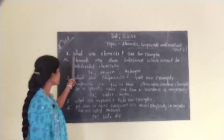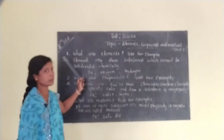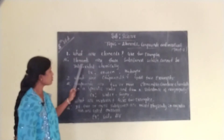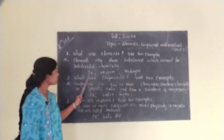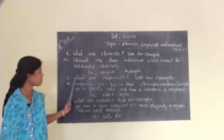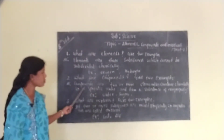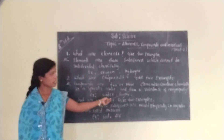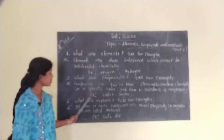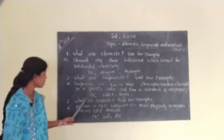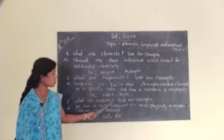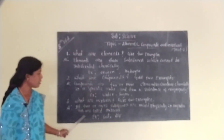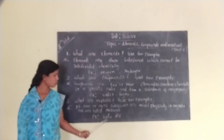Let me see some personal answers. What are elements? Give two examples. Elements are those substances which cannot be subdivided chemically. Examples: oxygen, hydrogen. What are compounds? Give two examples. Compounds are two or more elements combined chemically in a specific ratio forming a substance of new property. Examples: water, sugar. What are mixtures? Give two examples. If two or more substances are mixed physically in any ratio, these are called mixtures. Examples: soil, air.